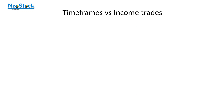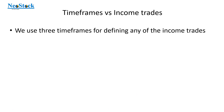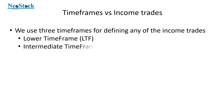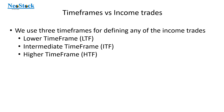Now let us correlate these time frames and income trades. We use three time frames for defining any of those income trades — a minimum of three time frames. One is called lower time frame, in short LTF. Another one is intermediate time frame, in short ITF. And the third one is higher time frame, in short HTF. All these three are technical terms — lower time frame, intermediate time frame, and higher time frame. Please remember these technical terms along with their short names: LTF, ITF, and HTF.